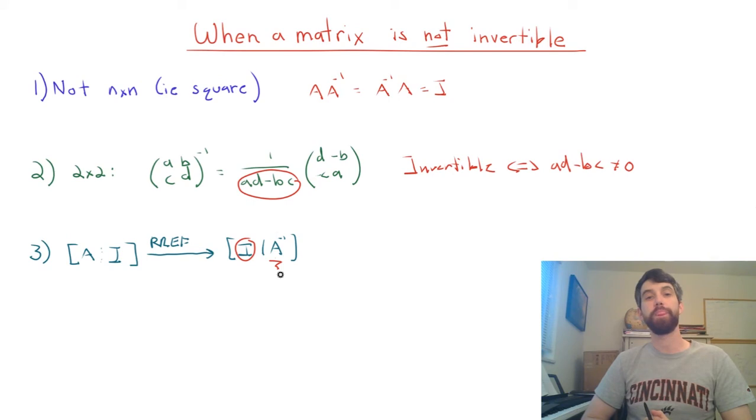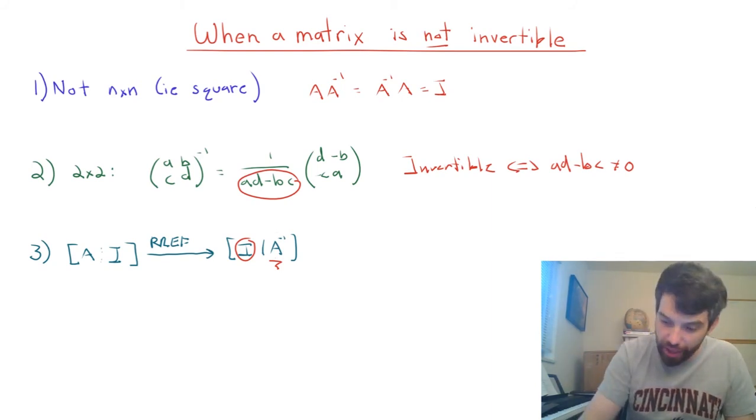I claim it's not going to be invertible. Or in other words, I'm going to say that if it's invertible, it has to go to the identity matrix. Okay, so let's try to look at that.